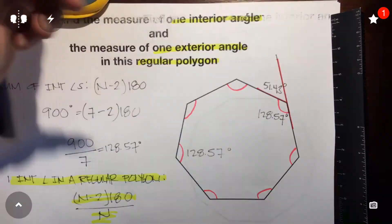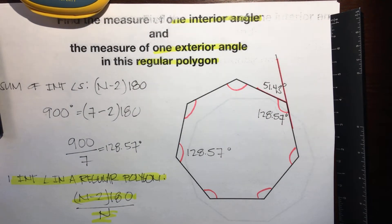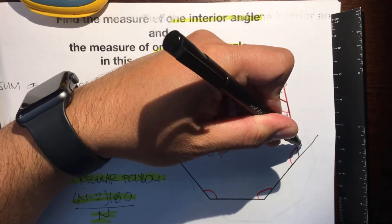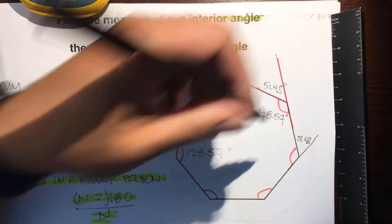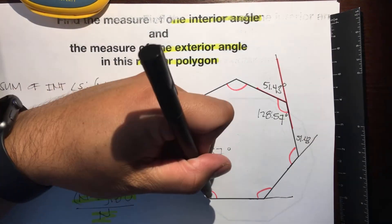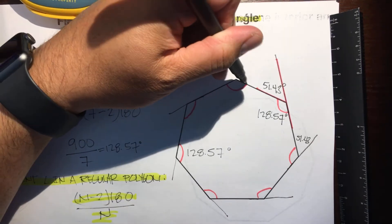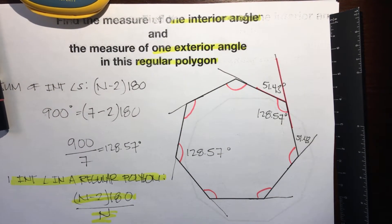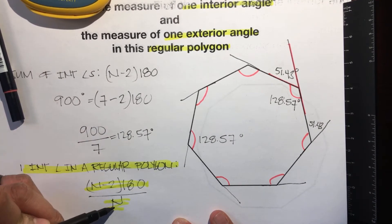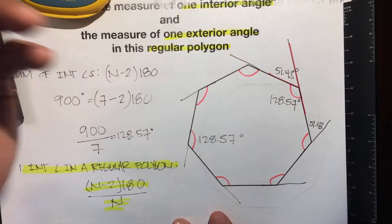All the interior angles are 128.57 degrees and all the exterior angles would be 51.43 degrees. So to find one interior angle in a regular polygon, use the formula — find the sum and divide it evenly by the number of angles. Then to get the exterior angle, just subtract from 180.